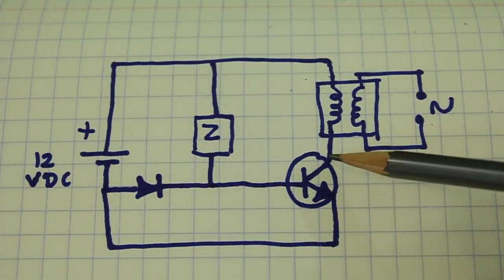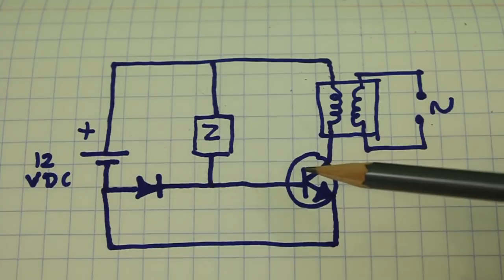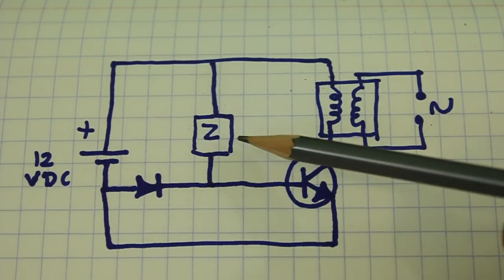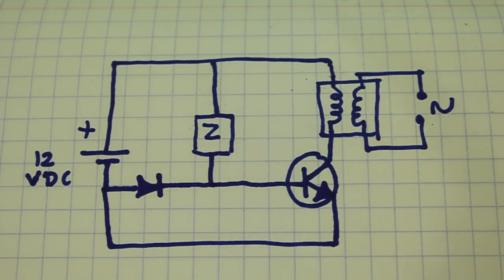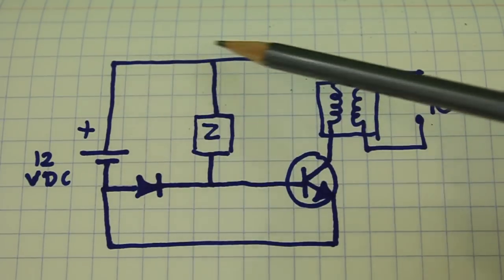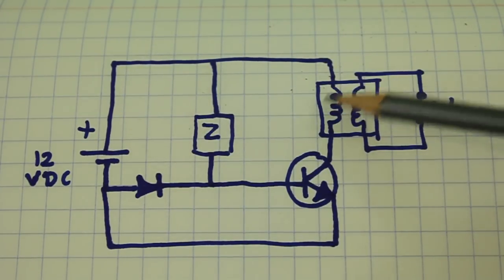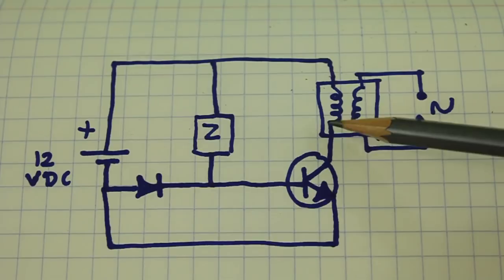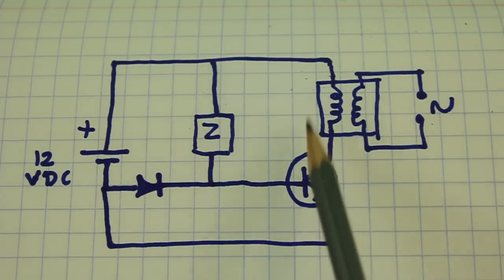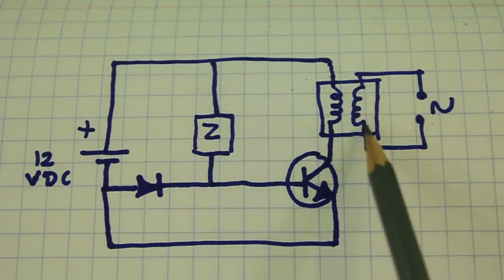The transistor will turn on and off at the same frequency of the buzzer. Therefore, the current through this coil of the transformer will be pulsating DC and will be amplified in the other coil.